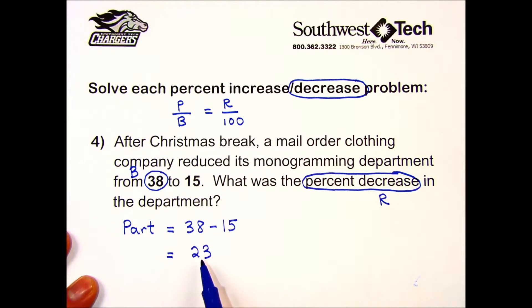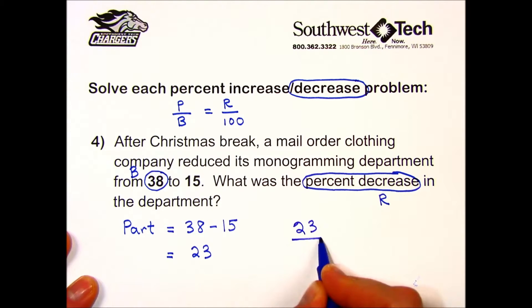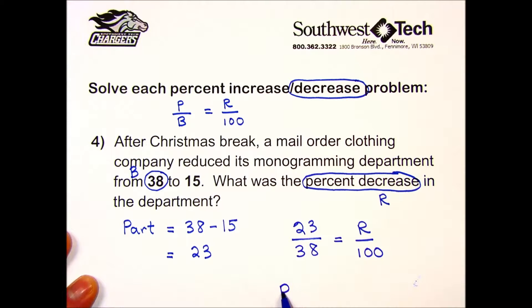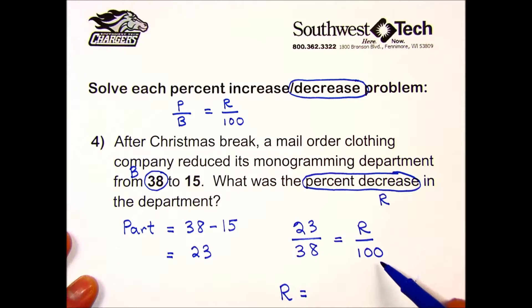Let's put these numbers into our formula: part over base equals rate over 100. I cross multiply using my calculator. Find the diagonal that has two numbers on it and multiply: 23 times 100, divided by the number on the diagonal with your unknown, 38. My calculator gave me 60.5. I include a percent symbol, and this is a decrease.